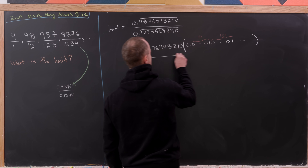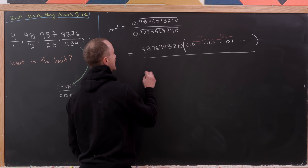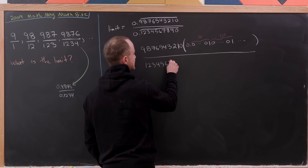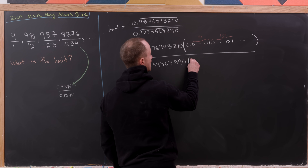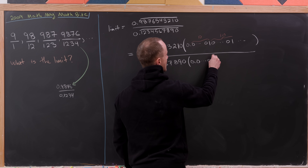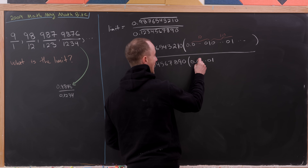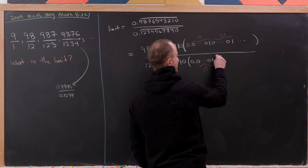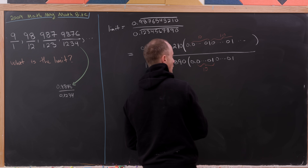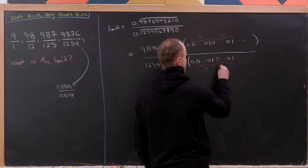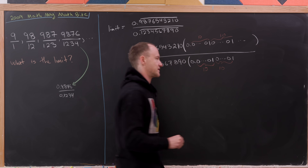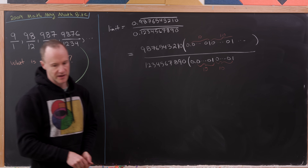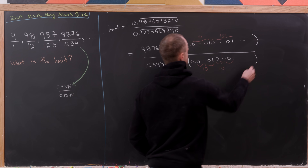The same structure is happening in the denominator: 1, 2, 3, 4, 5, 6, 7, 8, 9, 0. We've got 0.000...1 where that 1 is the 10th digit, then zeros up to the next 1 at the 20th digit, so 10 digits between those, and the next one at the 30th digit, and so on and so forth.